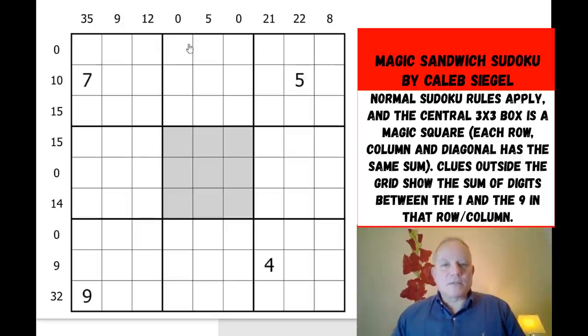It's a sandwich Sudoku, so the numbers outside the grid show the sum of the digits between the one and the nine in that row or column. When it says zero, that means the one and nine must come together with no digits between them at all. The central box is a magic square, so each row, column, and diagonal will all add up to the same number. Because it uses the numbers one to nine, that number will be 15. Normal Sudoku rules apply. Do have a go at this puzzle on the link below the video.